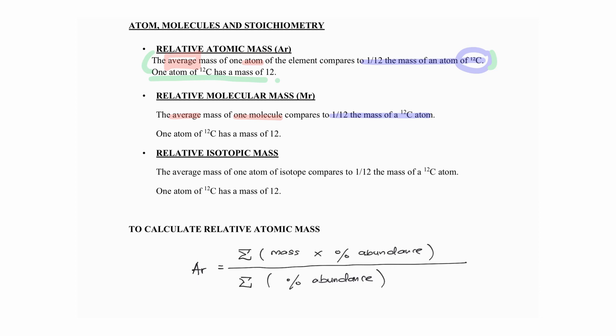We also have relative isotopic mass, which is the average mass of one isotope compared to one-twelfth of the mass of carbon-12. We can use this formula to calculate relative atomic mass — it is the same as calculating an average in mathematics: the sum of (mass of each isotope multiplied by its percentage abundance) over the total abundance, where the total percentage abundance is normally equal to 100.